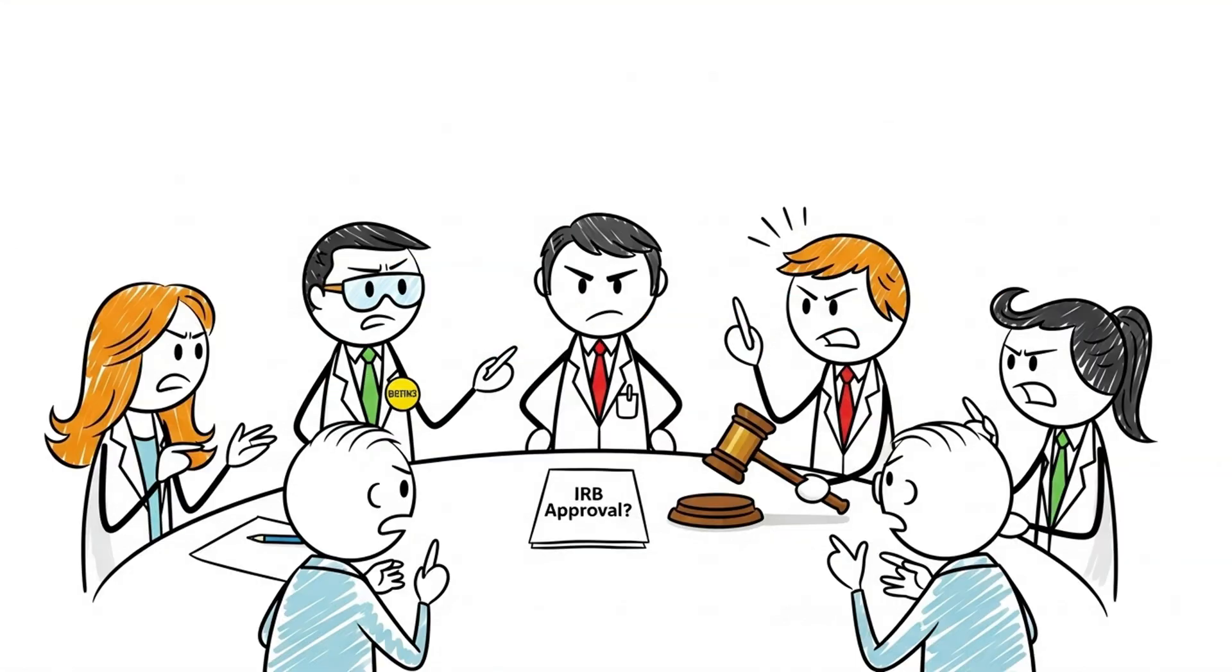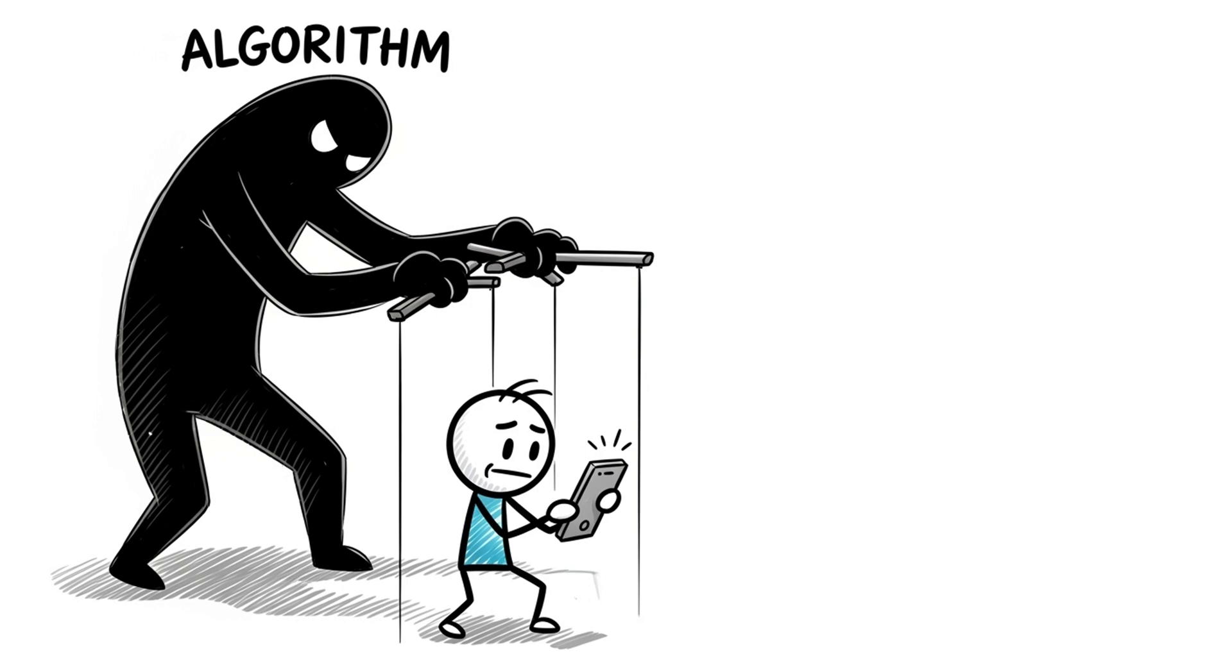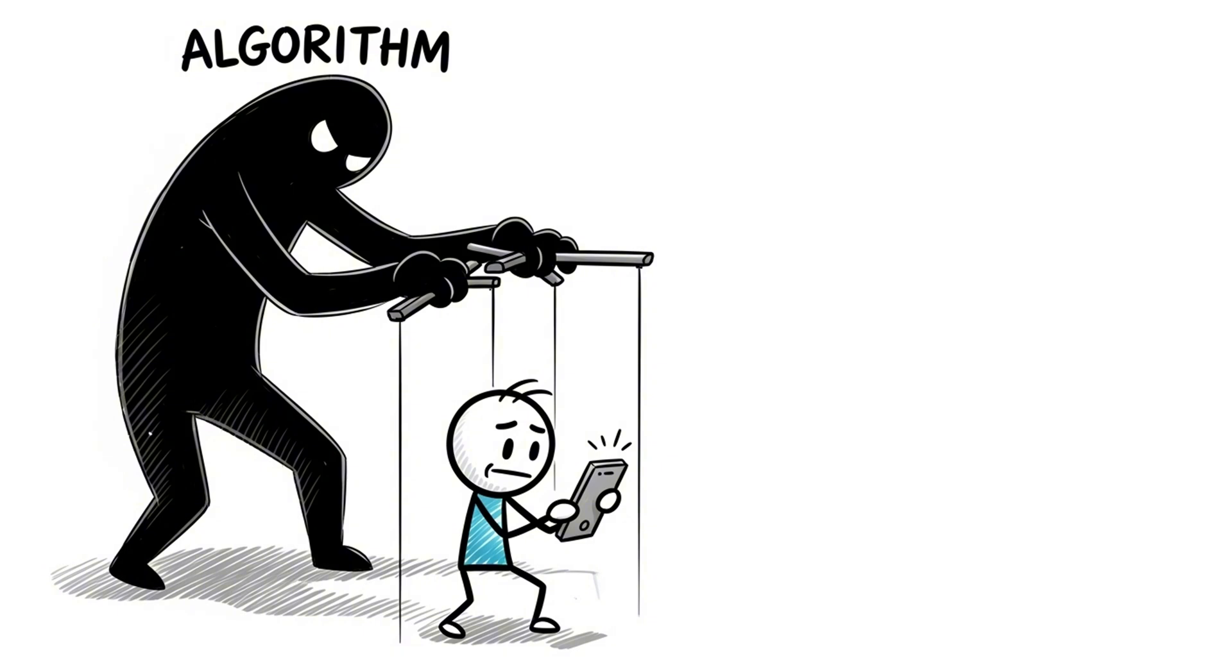Journalists, ethicists, and even some researchers were stunned. Was this science or manipulation? Facebook apologized. Kind of. They said they'd do better, but didn't really say how. The bigger lesson wasn't about sadness or smiles. It was about power. Who controls the feed controls what you feel. The algorithm didn't just learn emotions. It rewrote them. And for a brief moment, Facebook ran a psychological experiment on nearly 700,000 people. And no one even noticed.